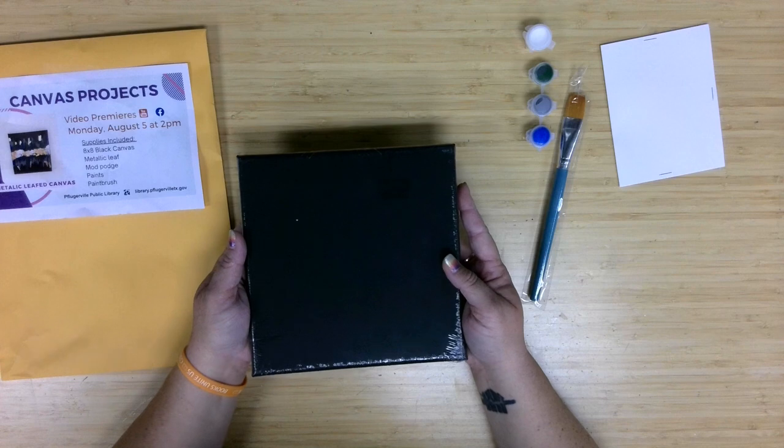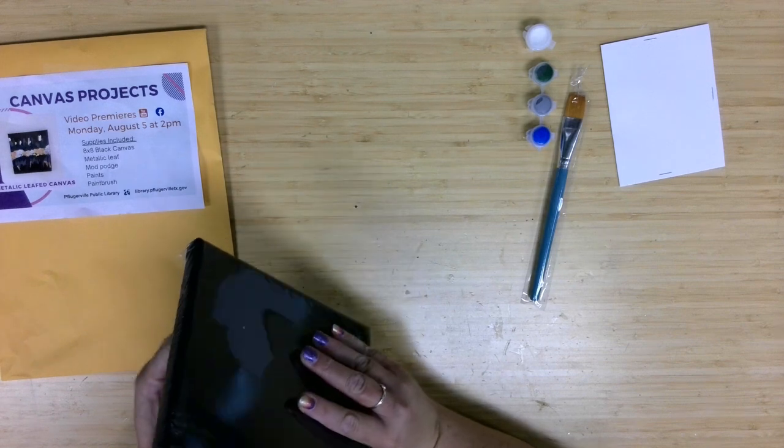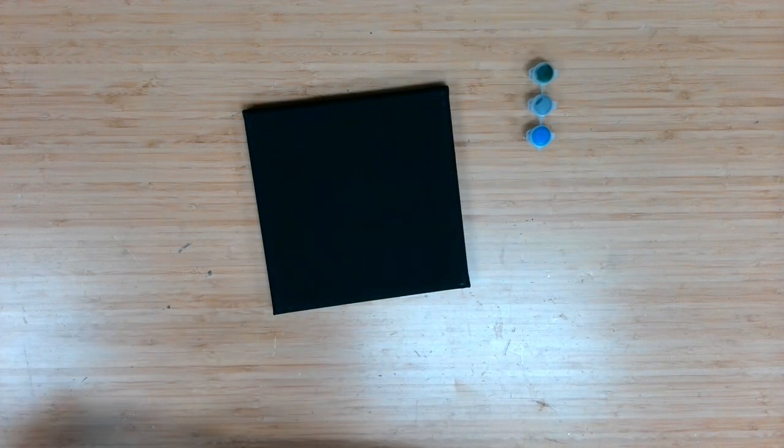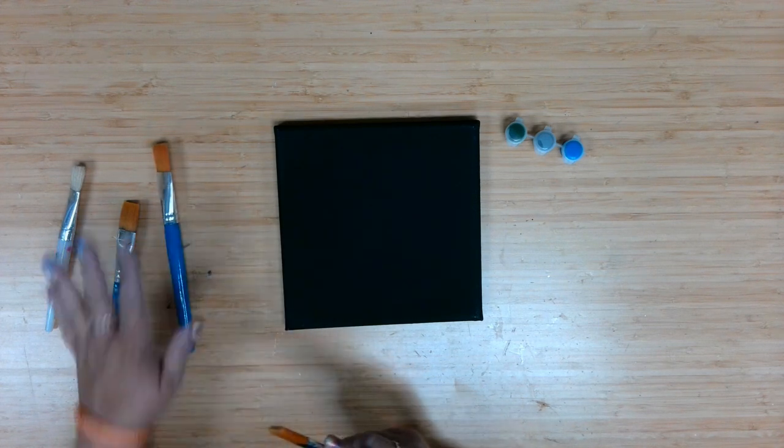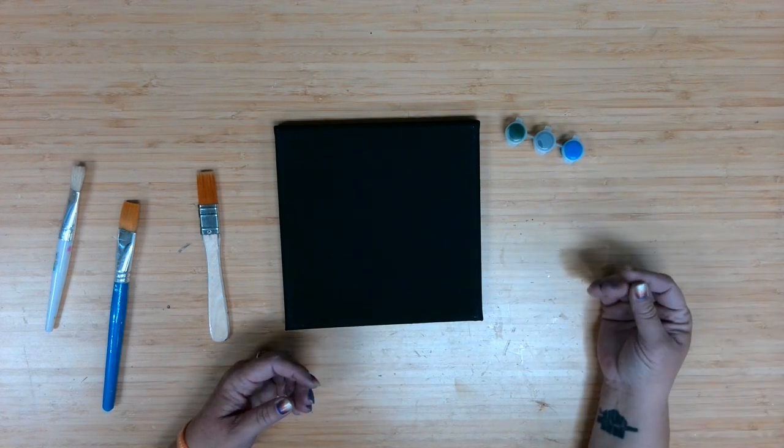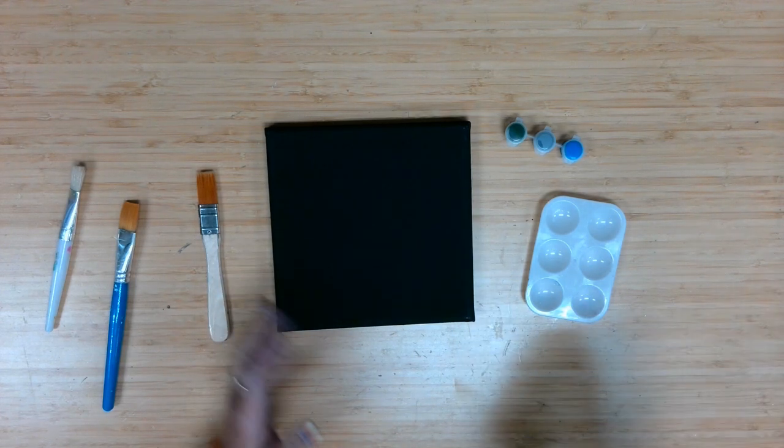And then for this month, it is an 8x8 square black canvas. Some of them will have the plastic on them, and some of them are already unwrapped. If yours has plastic, that will be your first step, will be to unwrap your canvas and set aside the things that you don't need currently. So I'm going to set aside my Podge for later. I am going to need my paintbrush. And we've got our three colors.